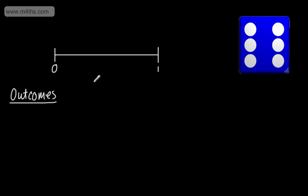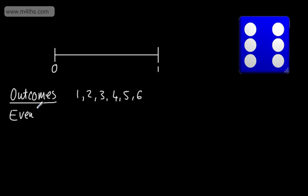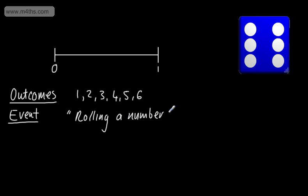The outcomes are all of the possible things that can happen — I could roll a one, two, three, four, five, or six. If we were looking at a game of football and one team, the outcomes are going to be lose, draw, or win. If we look at an event, an event is just considering one of these particular outcomes taking place. So a certain event would be rolling a number two — that is an example of an event. I could write this as P(2), the probability of rolling a two.